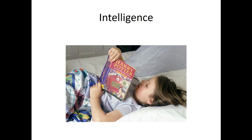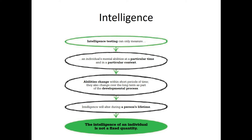You will certainly have come across the idea of reading age, in which children are judged on their ability in reading relative to where they should be at a certain age. For example, the Harry Potter series is determined as having a reading age of 9 to 11 years old. Intelligence testing can measure an individual's mental abilities at a particular time and in a particular context. Intelligence would change within a short period of time and also over the long term as part of the developmental process, meaning it is not a fixed quantity.